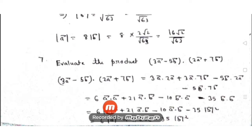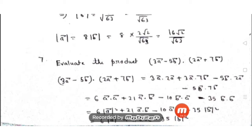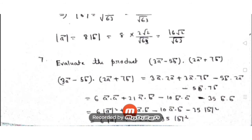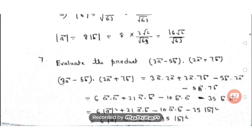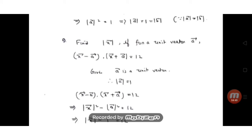Now, a·a = |a|² and b·b = |b|². Also, 21(a·b) - 10(b·a) = 11(a·b) since a·b = b·a. So the simplified result is: 6|a|² + 11(a·b) - 35|b|². That's the answer for question 7.